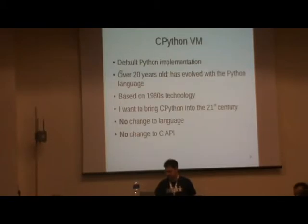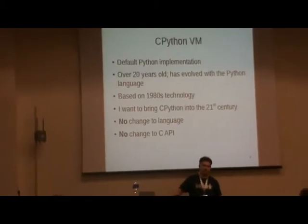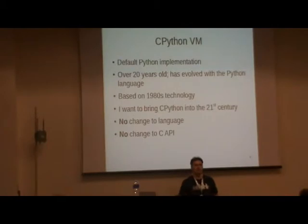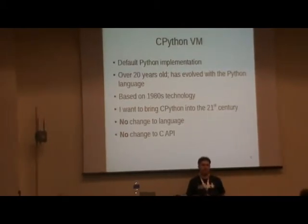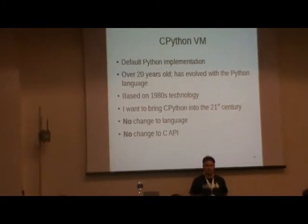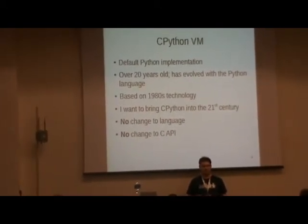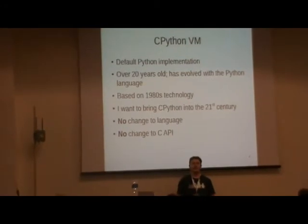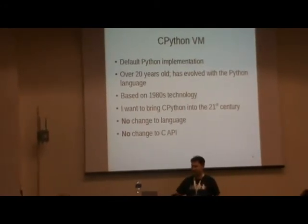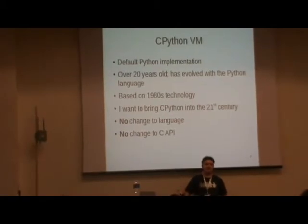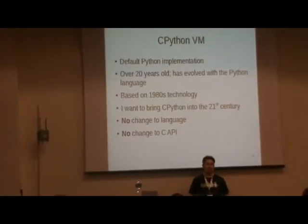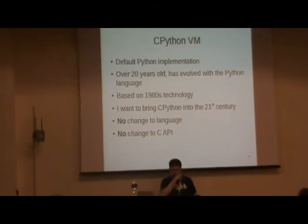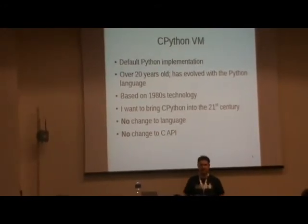CPython virtual machine — you probably all know this. It's quite old, and it evolved with the Python language, so it really wasn't designed to implement the Python we use today. When it was first built, Python didn't have a lot of stuff. Anyone remember Python 1.0? Things like descriptors, which are very important to the way the language works, just weren't in the language. So I'm going to bring CPython into the 21st century — it's probably still in the 1980s, really.